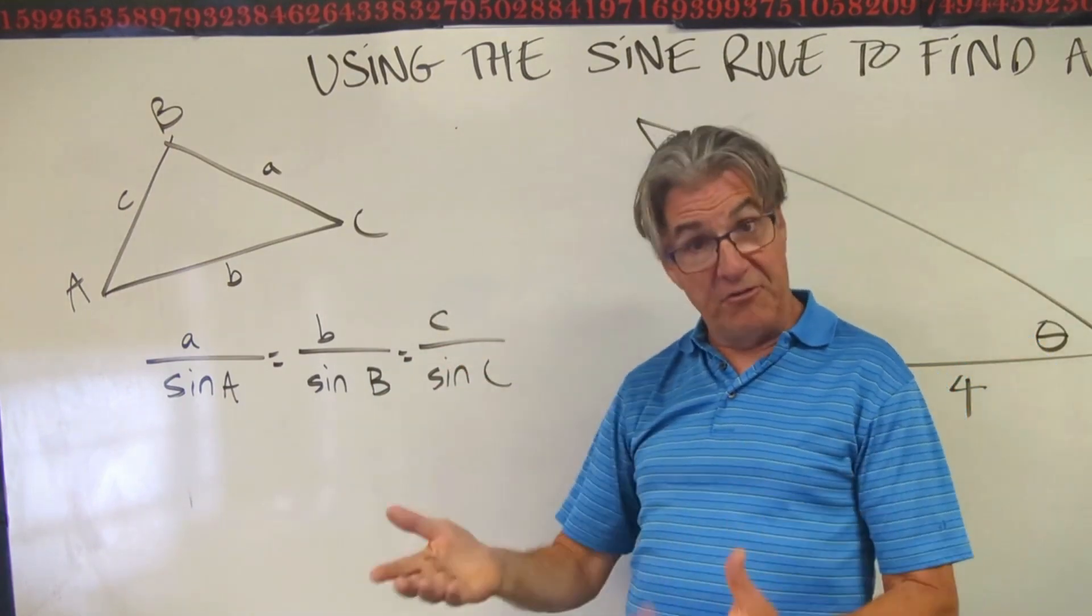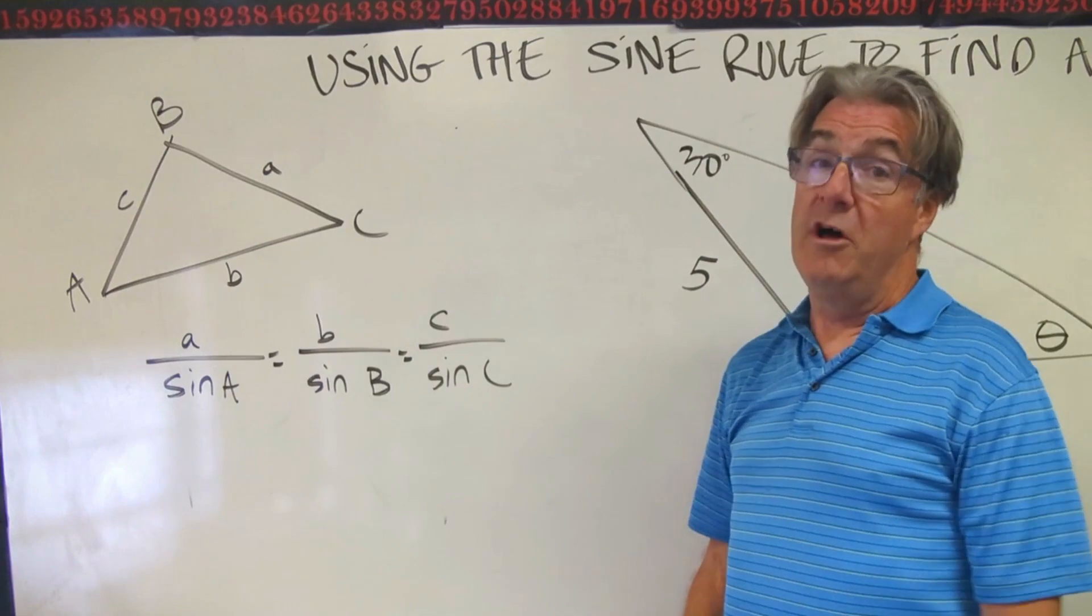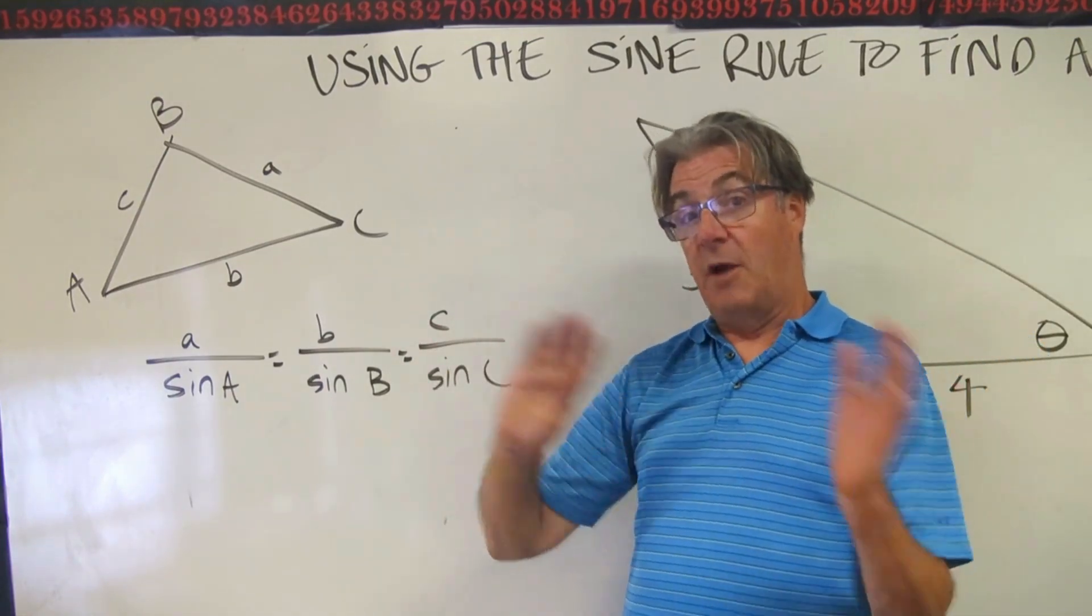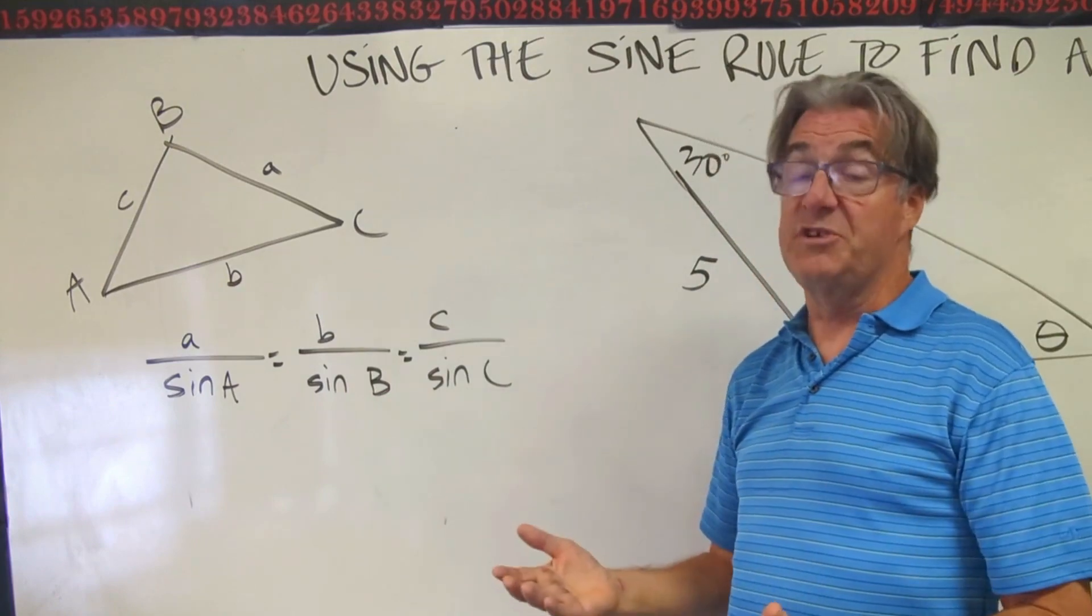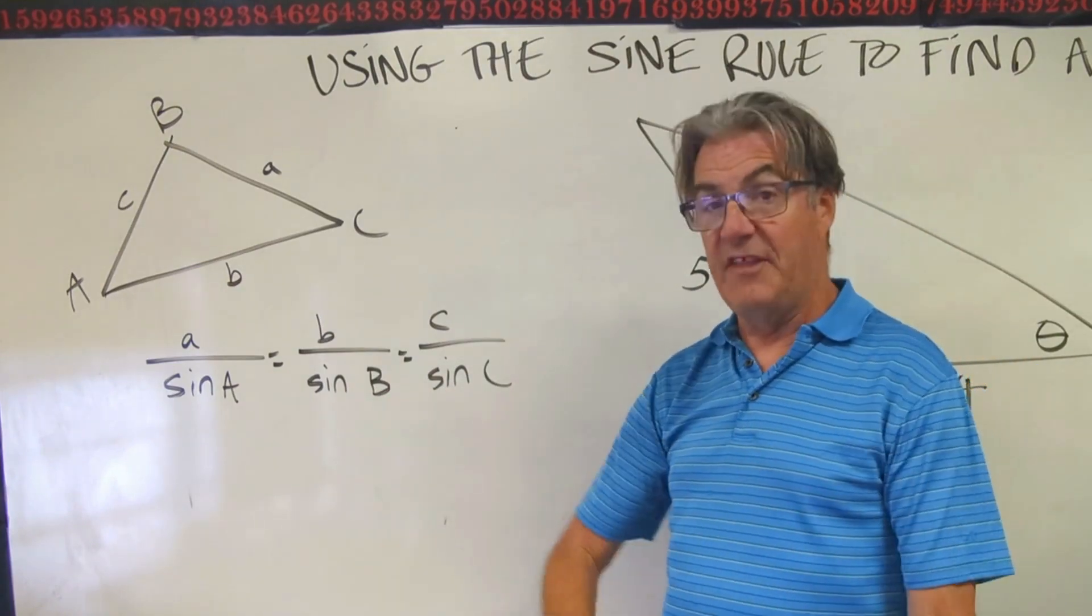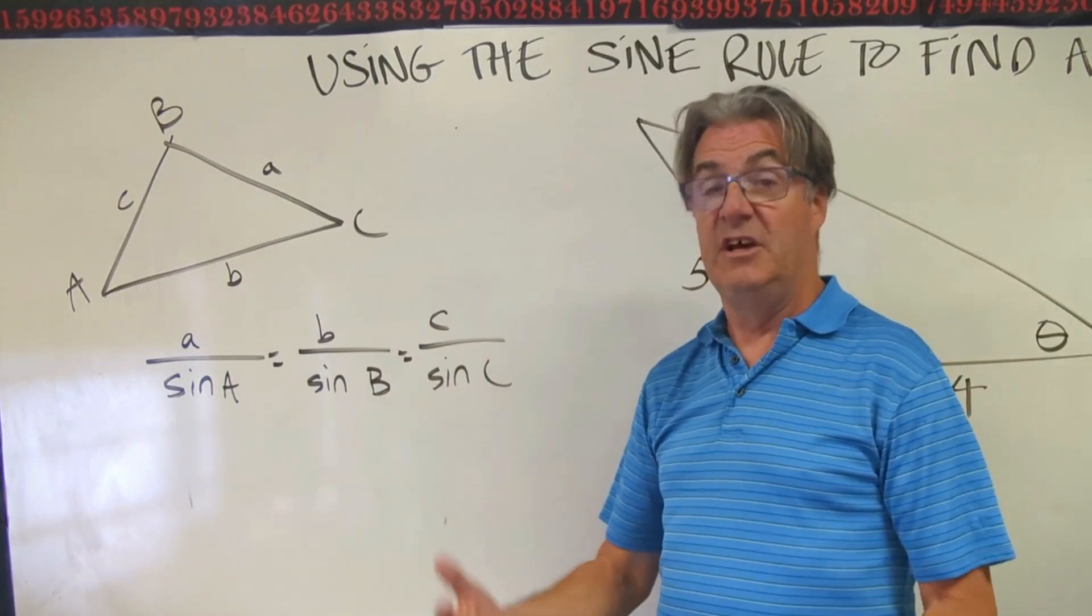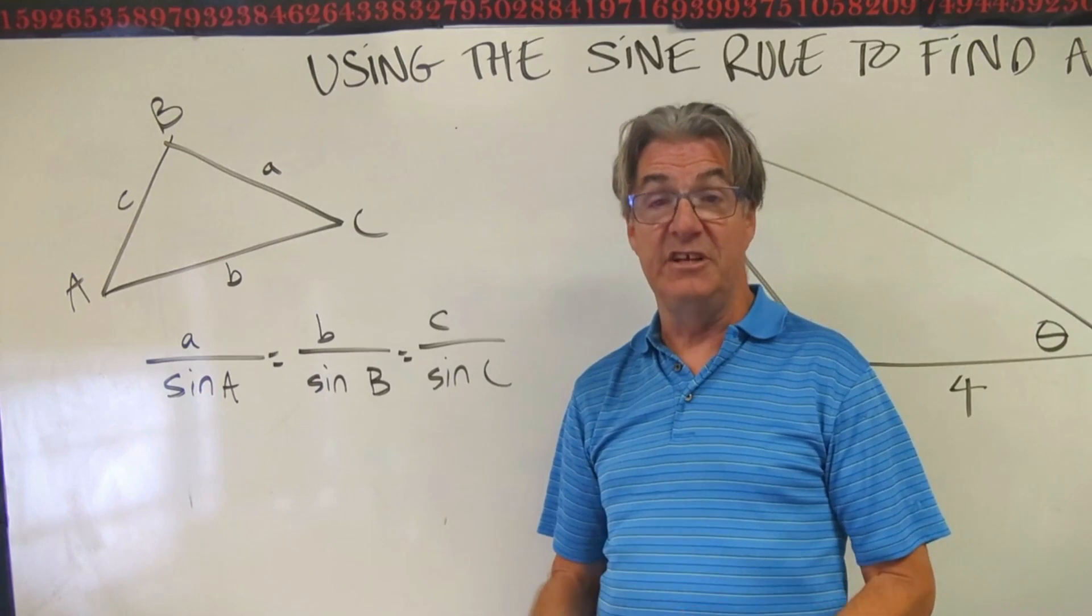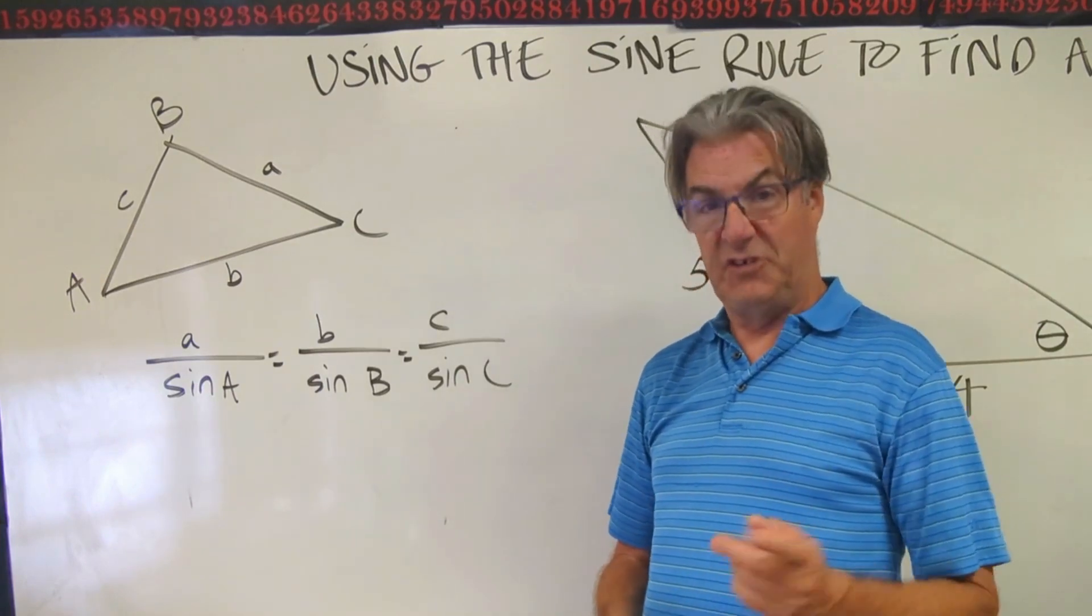So these problems generally have—they'll give you three things and ask you to find a fourth. In our previous lesson, that fourth thing was another side. In this lesson, that fourth thing is going to be another angle. That's the only difference. So you're going to end up taking the inverse sine of some fraction to find your angle. So let's check that out.